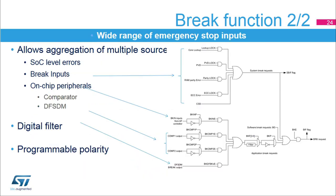Multiple brake sources can be combined for triggering a brake event. Five system level sources can be selected: the Core Lockup Cortex-M4 internal error, the PVD or Programmable Voltage Detector under voltage error, the SRAM parity error, the flash memory ECC error, and the Clock Security System CSS indicating an external clock failure. All these features can be individually selected, including the CSS. Brake inputs can also be detected with the alternate function controller on the MCU pinout. The two comparators and the digital filter DF-SDM can also serve as emergency shutdown sources when they detect out-of-range signals.